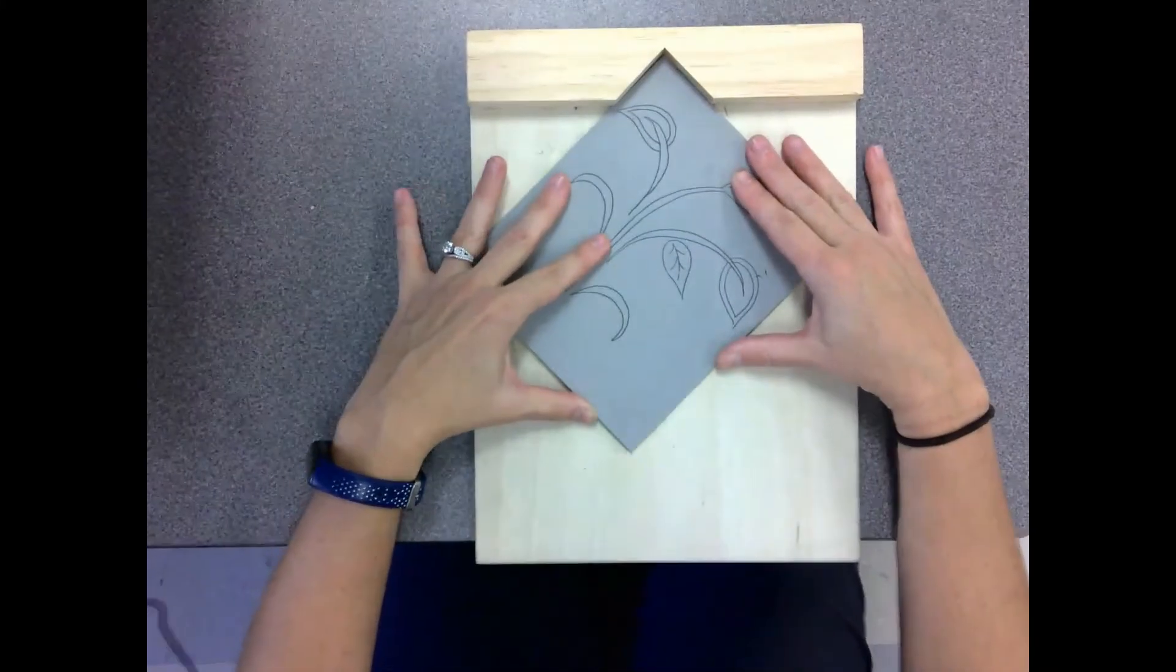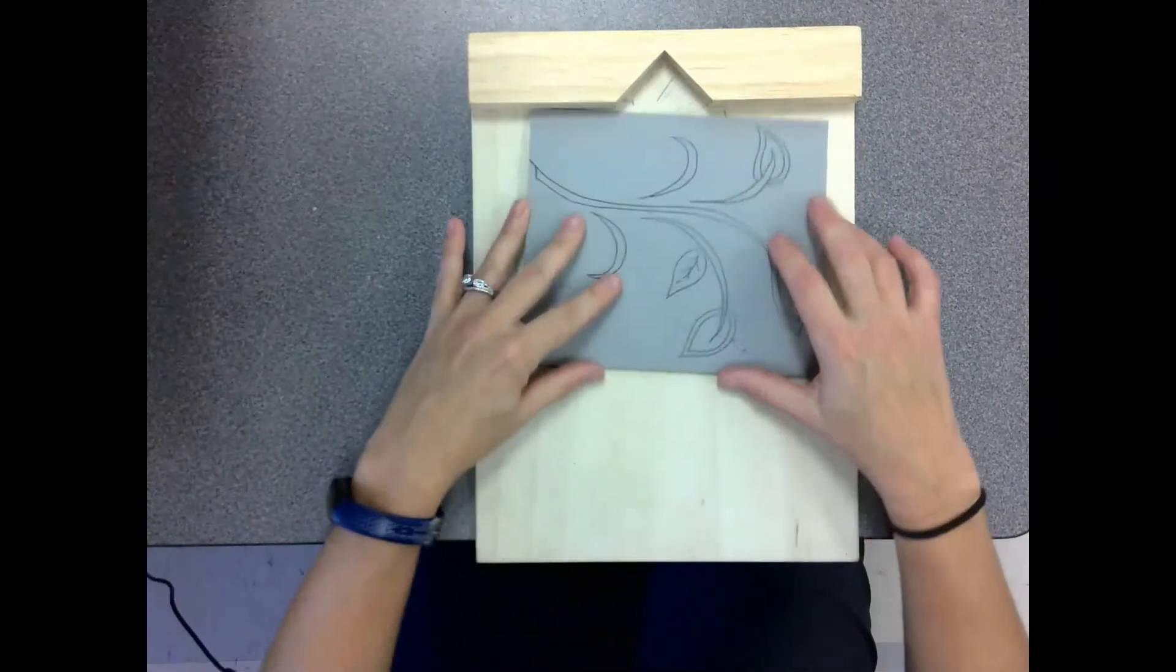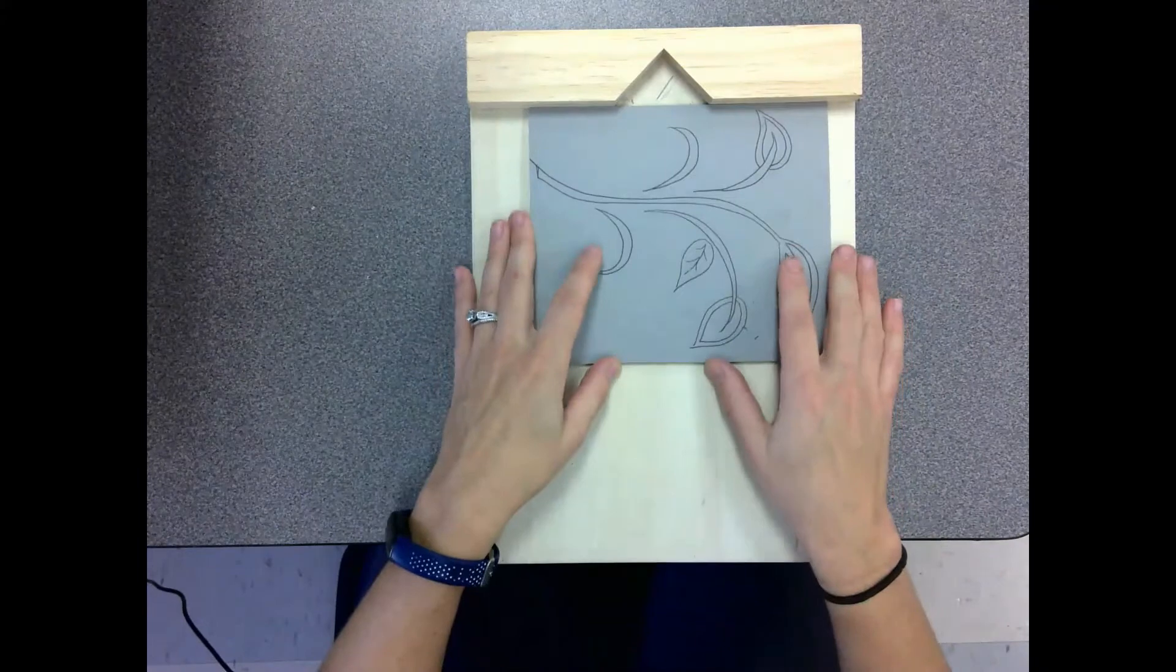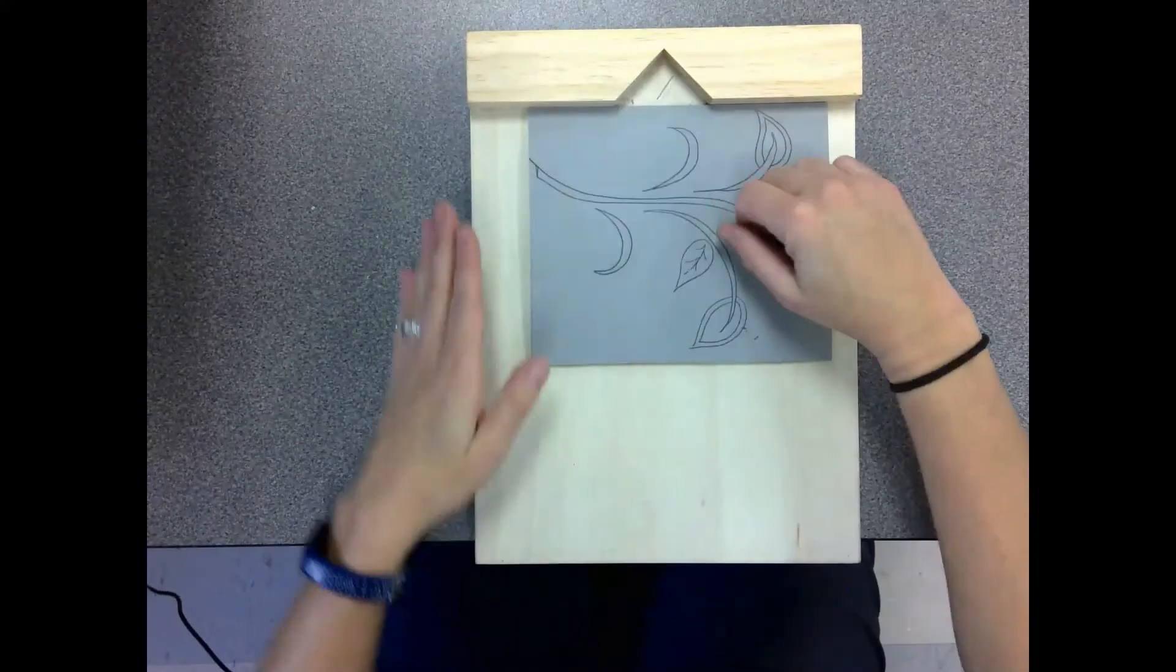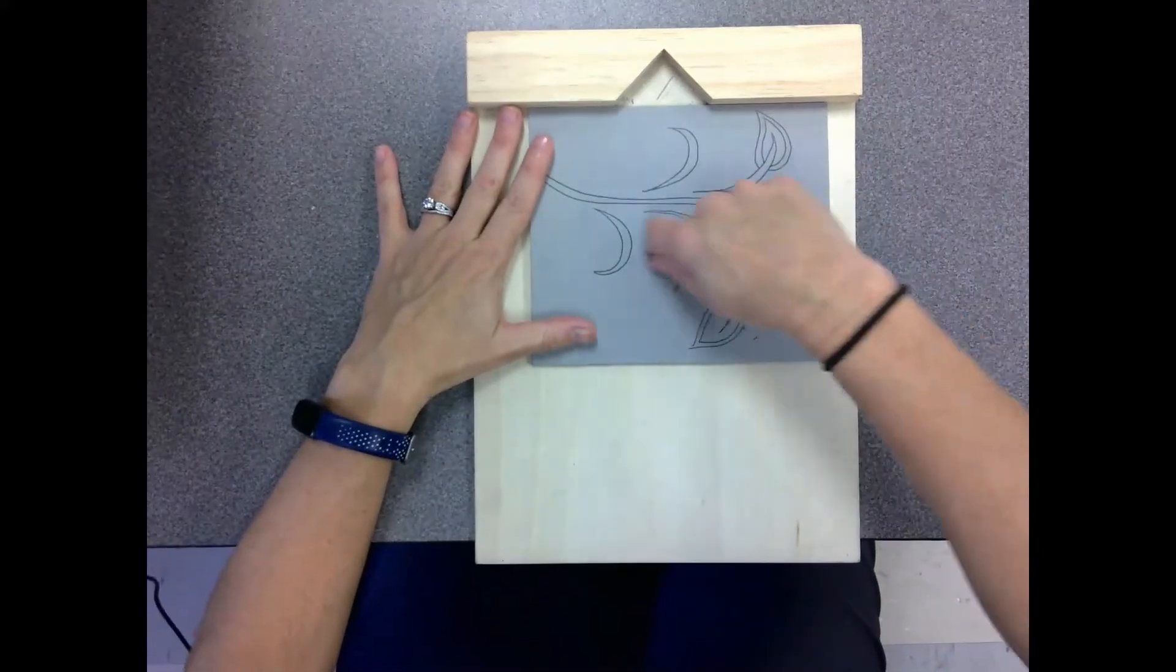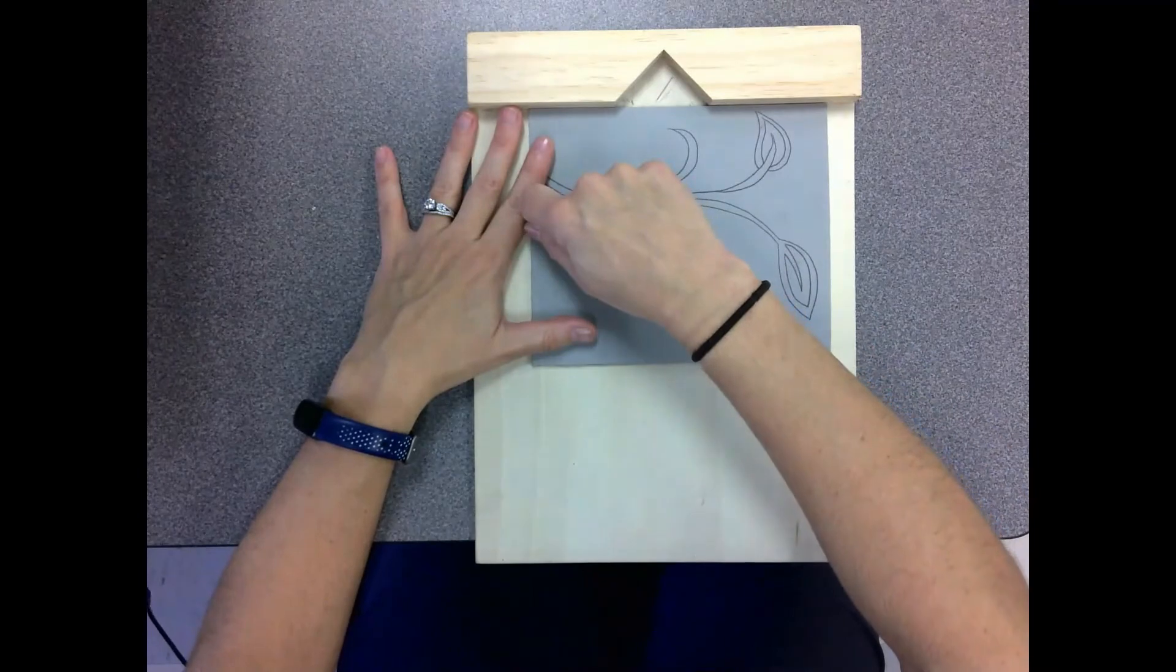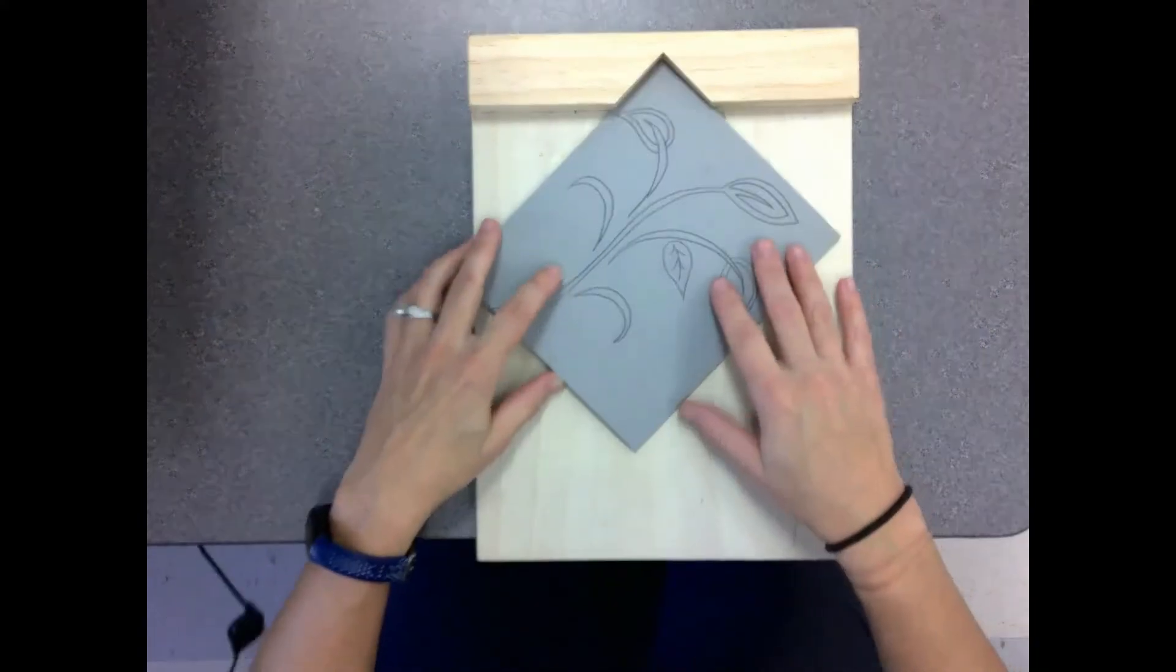And so whenever you're doing a diagonal you're going to rotate your plate. You always want to be going in this direction when you're carving. You never want to have your hand here and carving this way because if it slips that's where you're going to gash yourself. So always make sure that you're carving away from yourself.